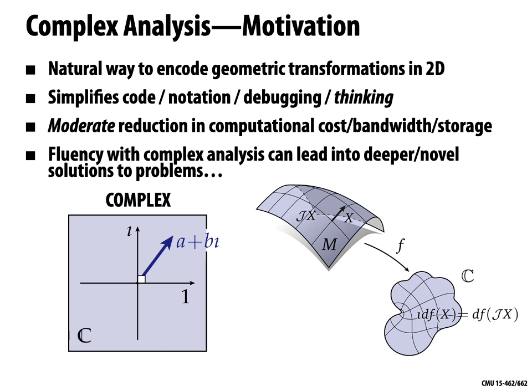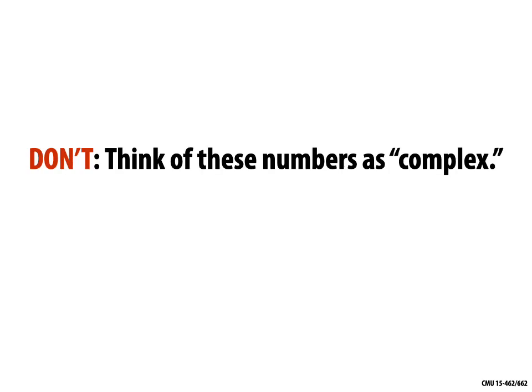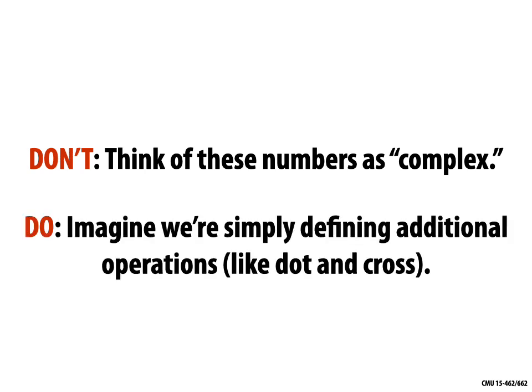Once this really sinks in, I hope you'll think — as I do — that there's really never a great reason to just use 2D vectors instead of complex numbers. Complex numbers are a strictly better replacement for ordinary 2D vectors. As we start here, I really want you to not think of these numbers as complex. They're not special entities that are weird and different — they're just ordinary two-dimensional vectors, and we happen to be defining additional operations on them, just like we define the dot product and the cross product.